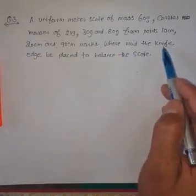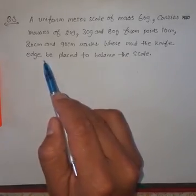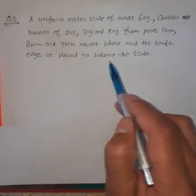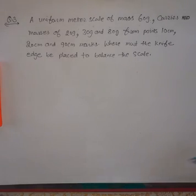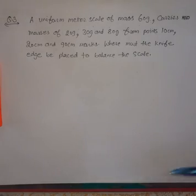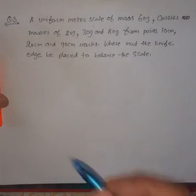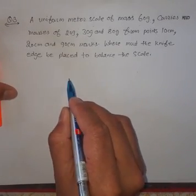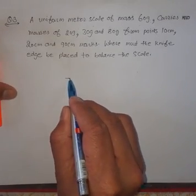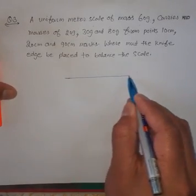Let us draw the diagram first. The meter scale is uniform — meaning it has uniform thickness and uniform mass distribution. Here is the meter scale running from 0 to 100 cm.